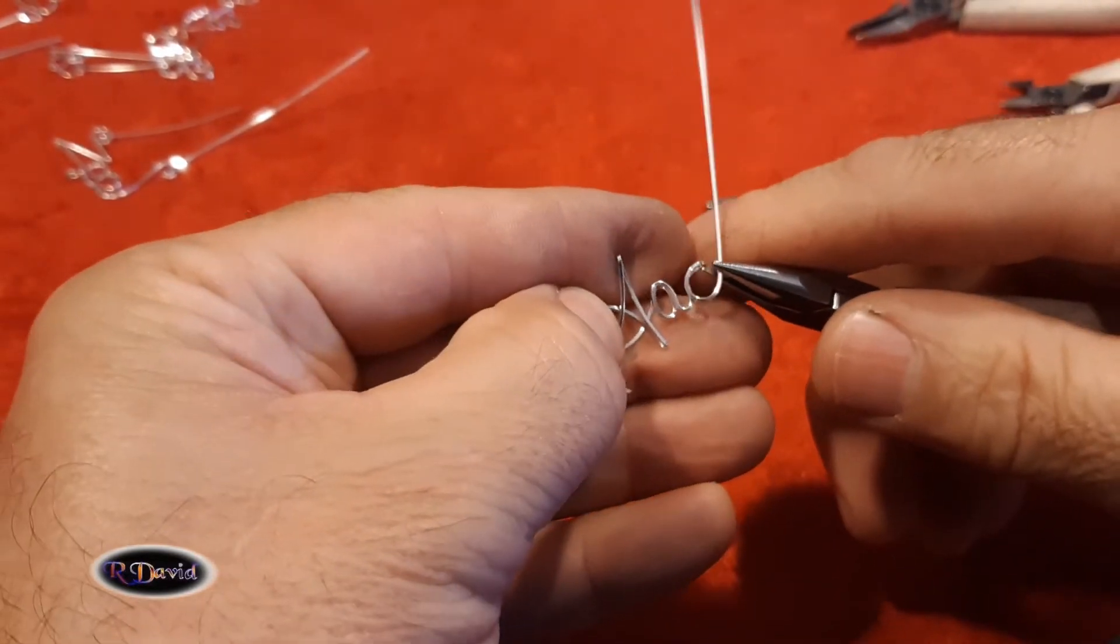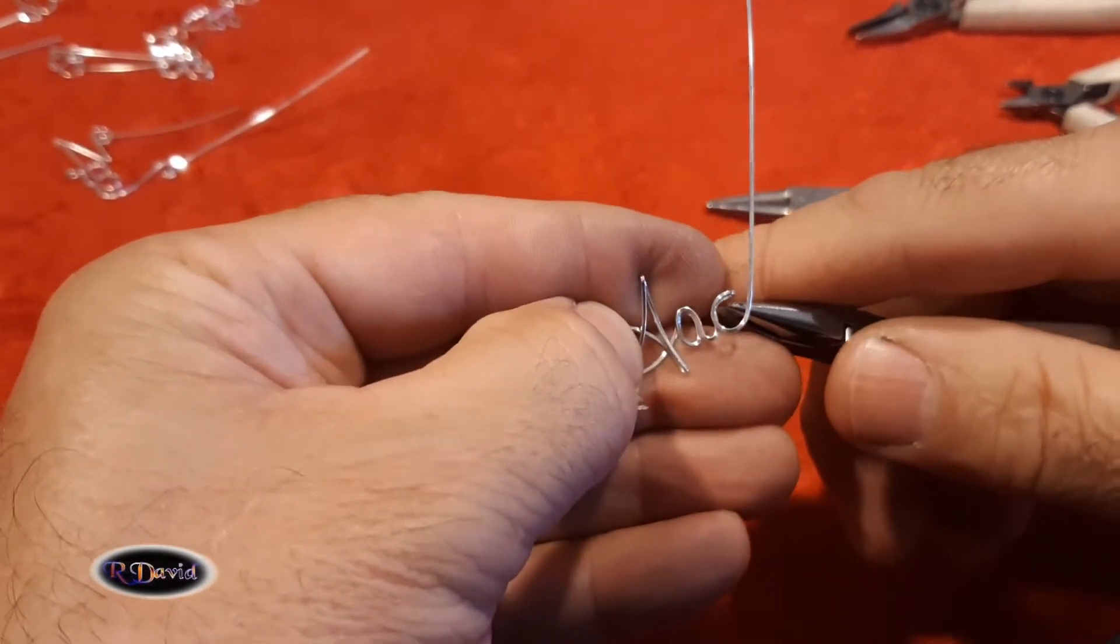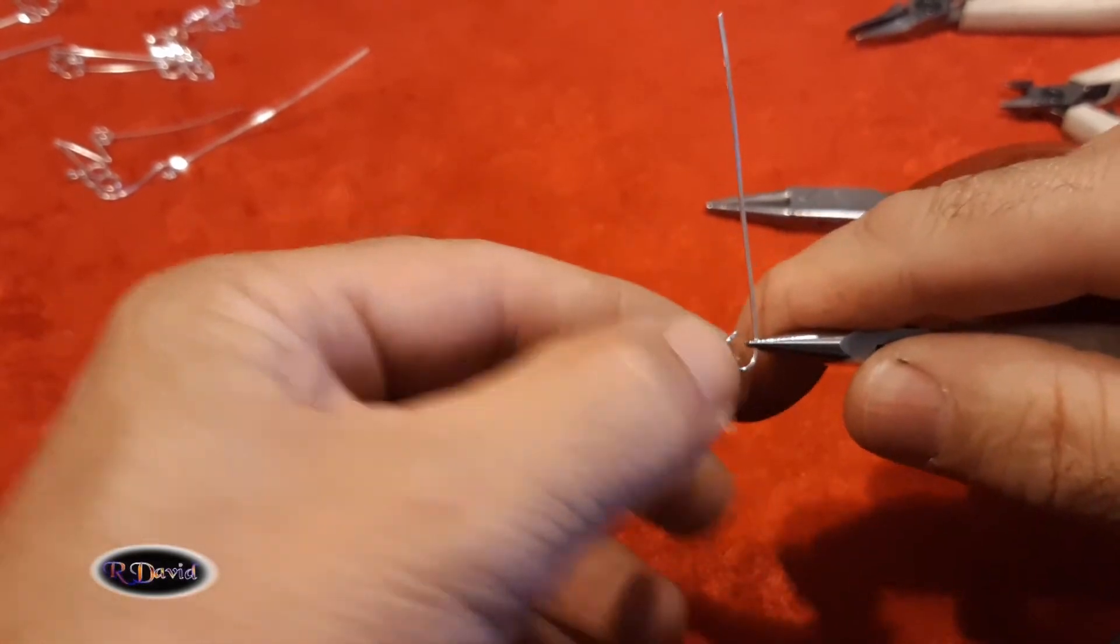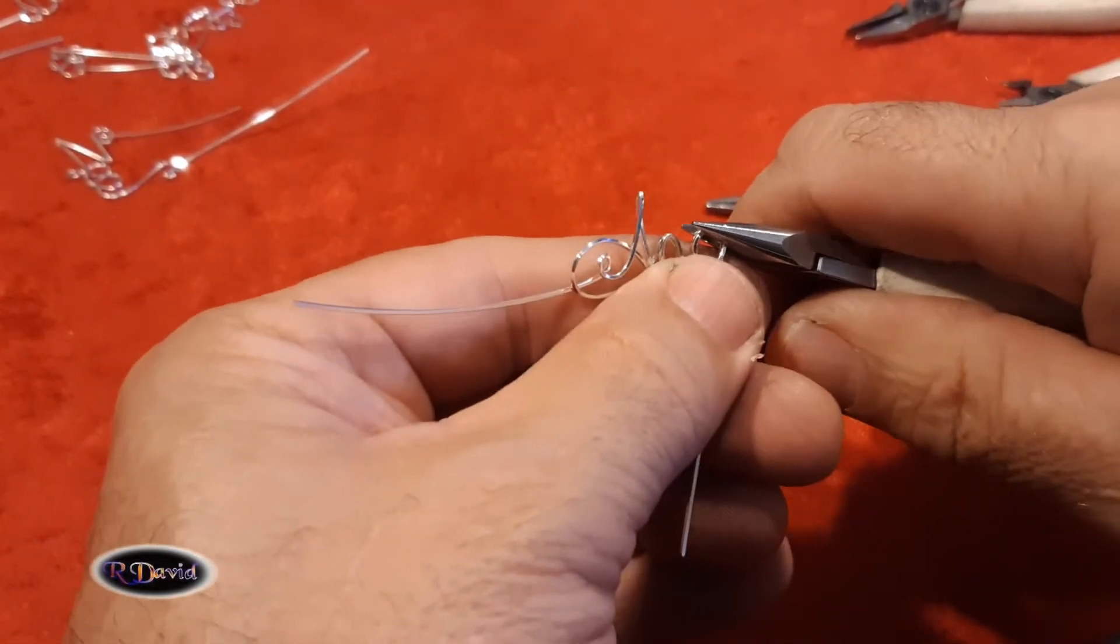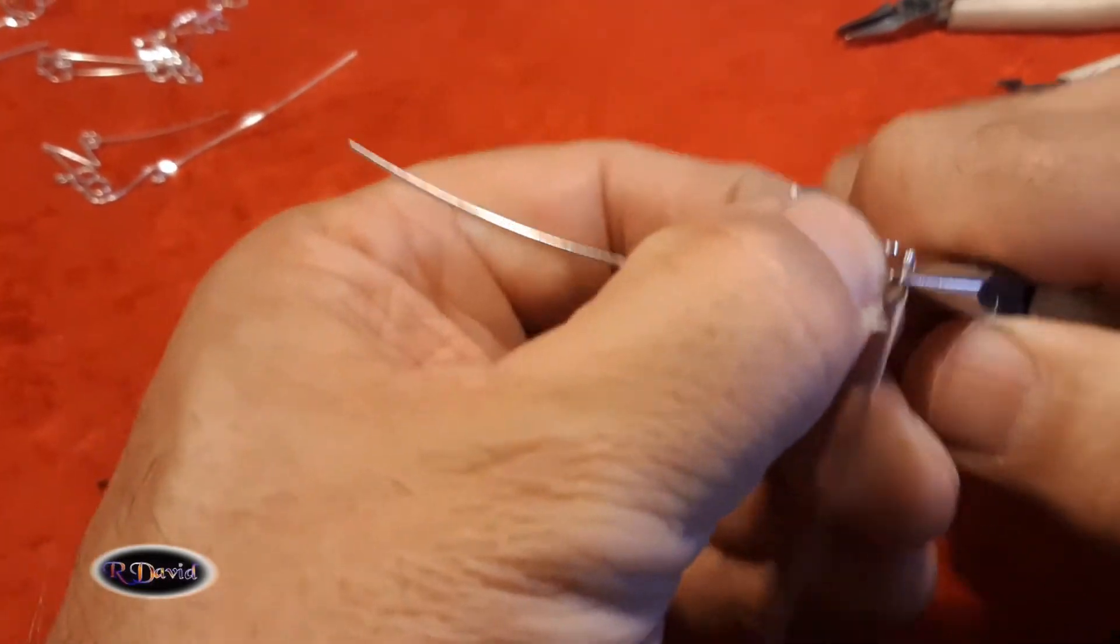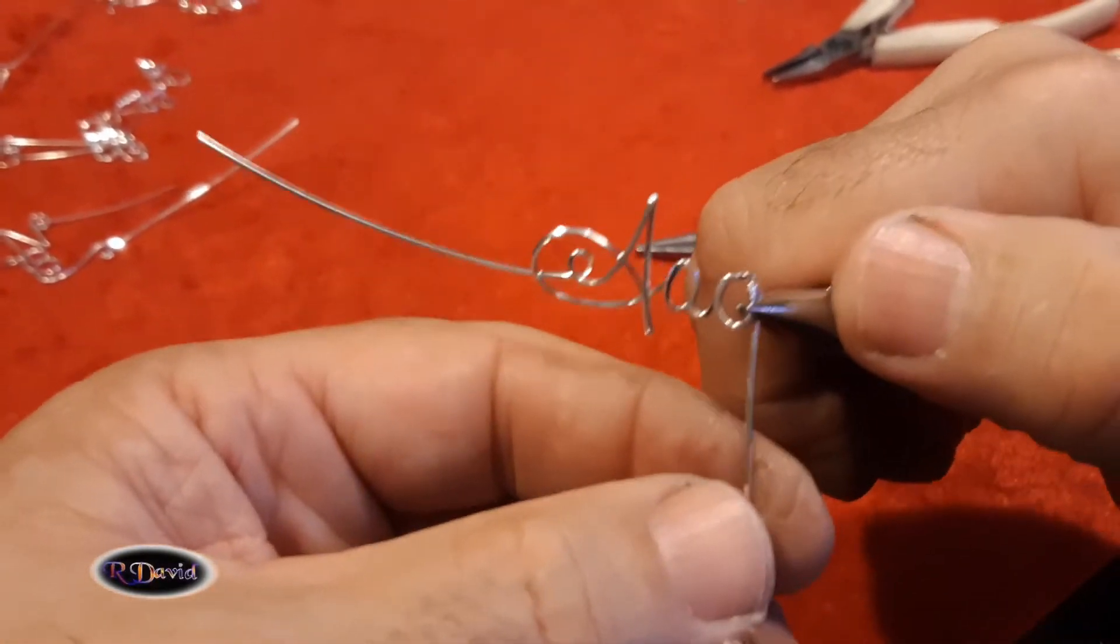Grab your chain nose pliers and go where you would think it would fall below this section of the A. Push it in here, fold it down, crimp it, and then move it up underneath the C, the C section.